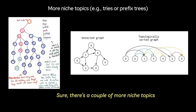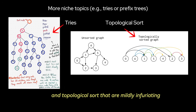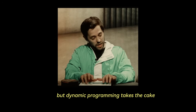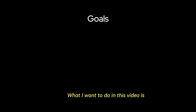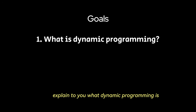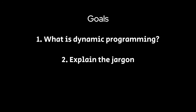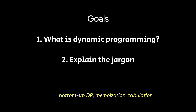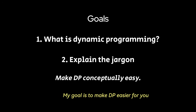Sure, there are a couple of more niche topics like monotonic stacks, union find, tries, prefix sum, and topological sort that are mildly infuriating, but dynamic programming takes the cake for being the most hated. What I want to do in this video is explain to you what dynamic programming is and break down all the scary jargon surrounding it — optimal subproblems, top-down DP, bottom-up DP, memoization, tabulation, the whole shebang. My goal is to make DP easier for you.